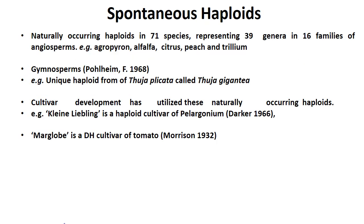Coming to spontaneous haploids. Naturally occurring haploids in 71 species representing 39 genera in 16 families of angiosperms include: Agropyron, alfalfa, citrus, peach, trillium.